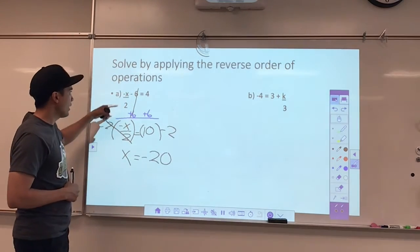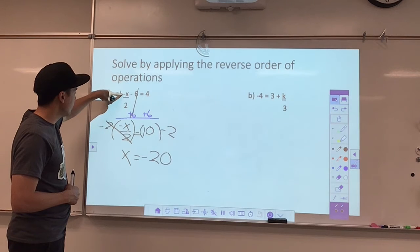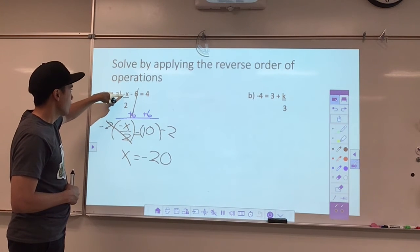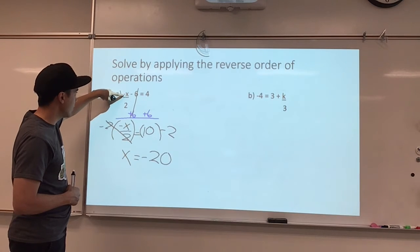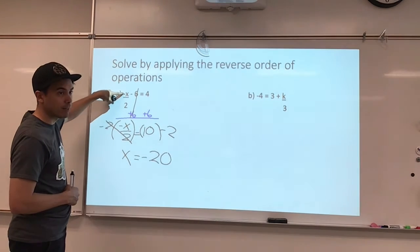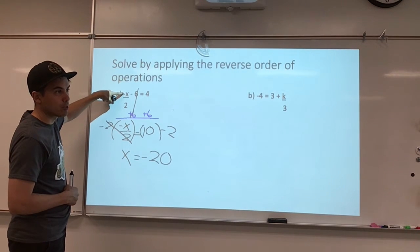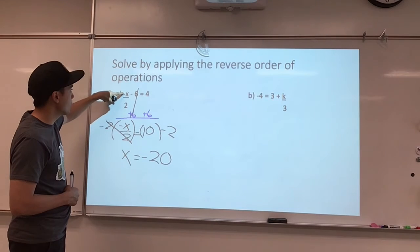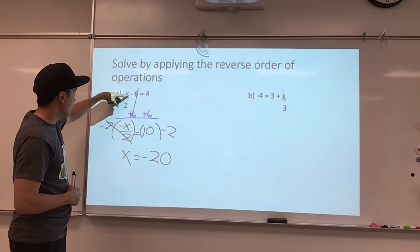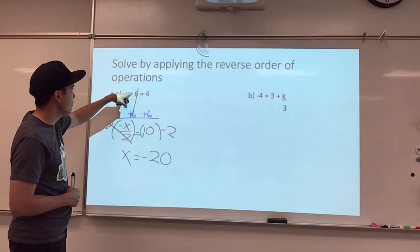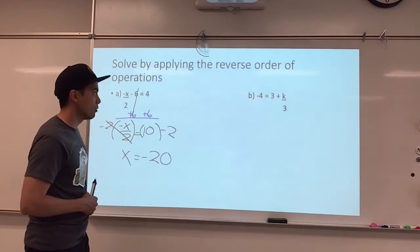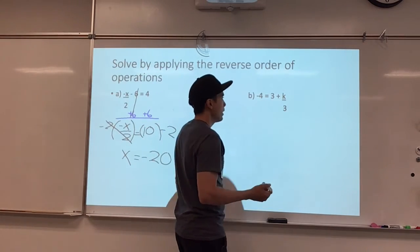Quick check: if I replace x with negative 20, I'd have two negative signs in a row — a negative 1 times negative 20 — which eventually becomes 20 over 2, which is 10. Then 10 minus 6 is 4. So the left-hand side equals the right-hand side — I'm in great shape.